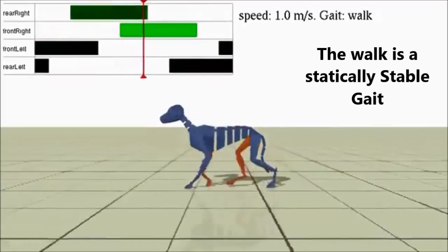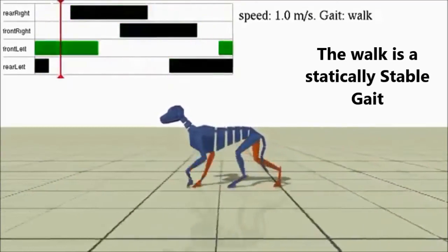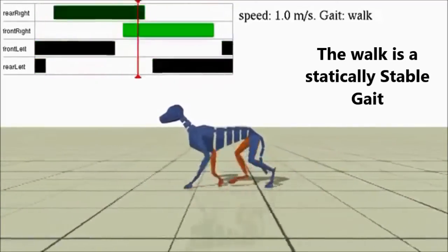The walk is the symmetrical four-beat pattern that always has at least two feet on the ground and occasionally three feet. The walk is the slowest and consumes the least energy.